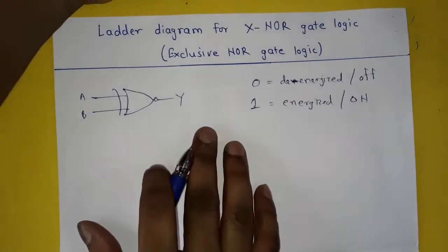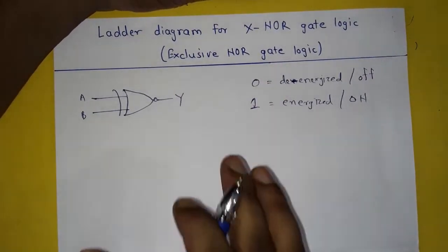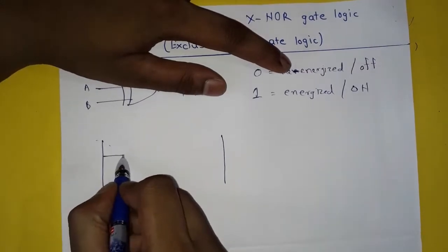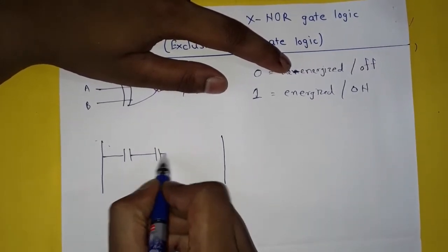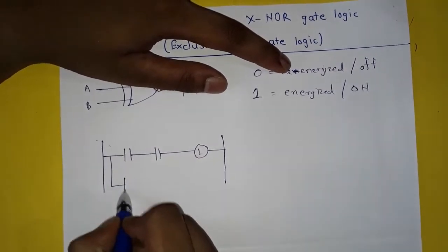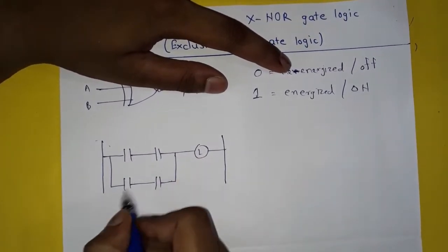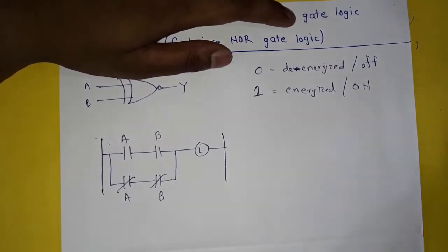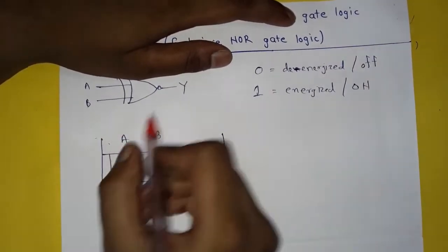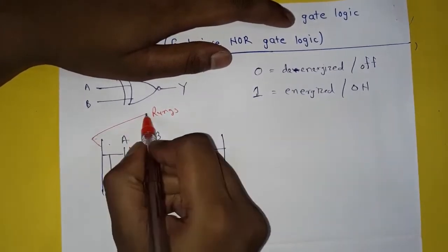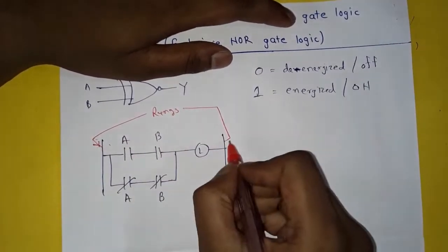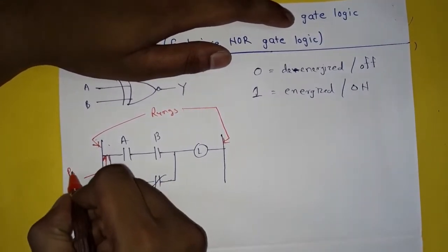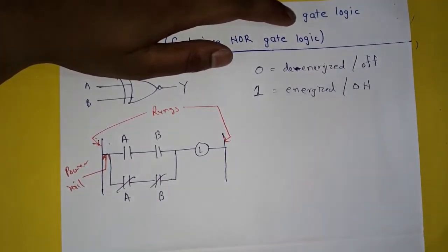Now let's see how to use this XNOR or exclusive NOR gate logic in ladder diagram. These are the rungs. This is the control relay or switch, and this is our lamp control relay. These are A, B, A, B — these are the rungs — and this is our power rail.